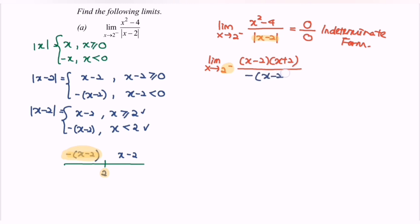We replace the absolute value of x minus 2 with negative (x minus 2). Notice there is a common factor of x minus 2 in both the numerator and denominator, so we simplify. The limit as x approaches 2 from the left becomes negative bracket x plus 2. Substituting the value, the answer approaches negative 4. Thanks for watching.